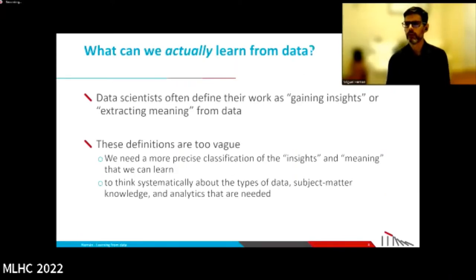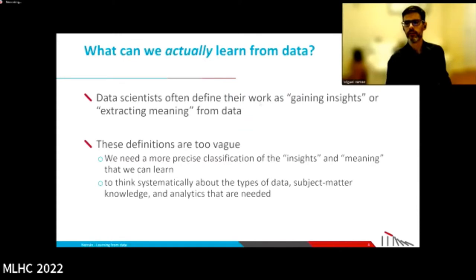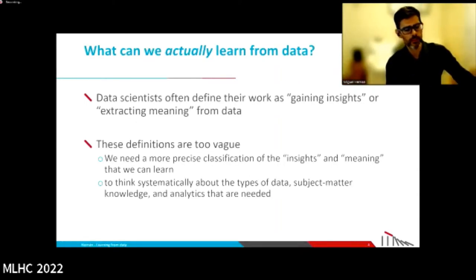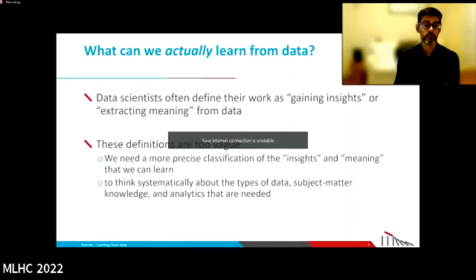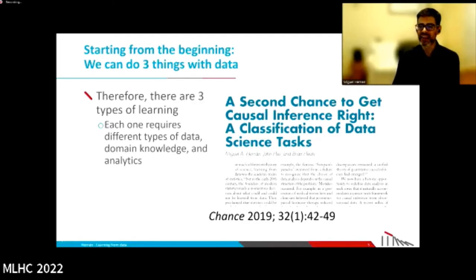What can we actually learn from data? People typically say that what they are doing is gaining insights from data or extracting meaning from data. Those definitions are too vague. We need to think about the types of data, the types of subject matter knowledge, and the analytics we need. We better know what type of insights we are after. I'm going to claim that there are only three things we can do with data — three types of data, three types of domain knowledge, and three types of analytics.